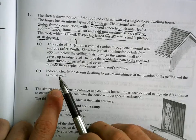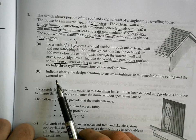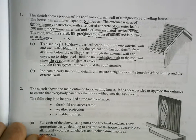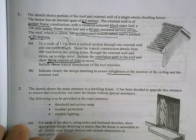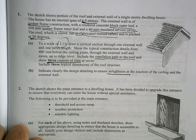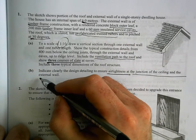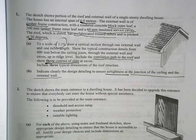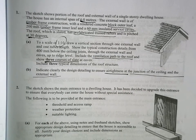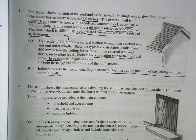Include three typical dimensions of the roof structure. Part B is asking you to clearly indicate the design detailing to ensure air tightness at the junction of the ceiling and the external wall. So that's basically going to mean packing in some extra insulation and making sure we have a cavity closer at the top of the eaves. You'll also need some sort of ventilation to avoid the timber from rotting.